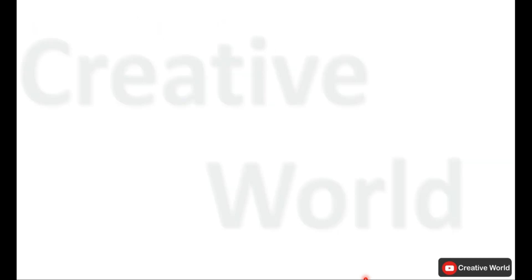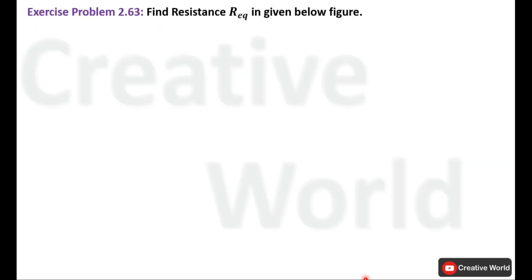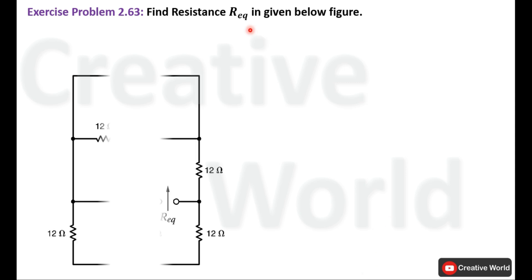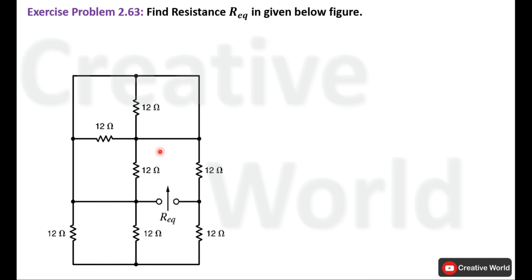Now let's move towards the problem. Exercise problem number 2.63: find R equivalent in the given figure. This is the circuit diagram of the given problem. We have to find the total resistance labeled as R equivalent between these two points inside this network.